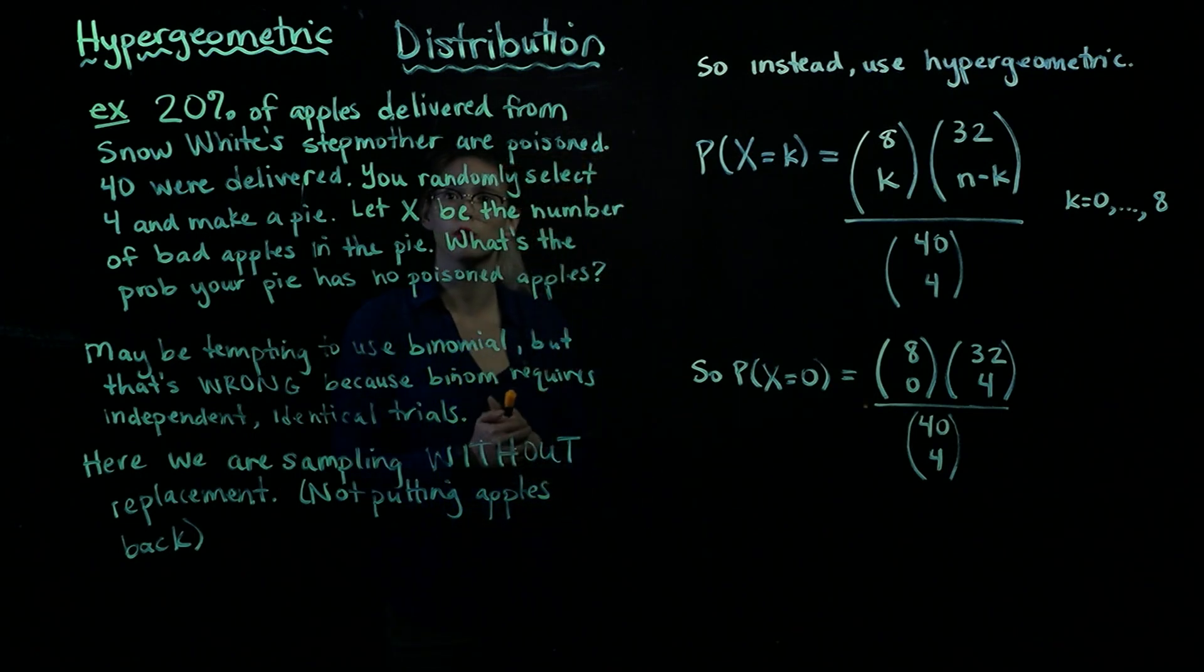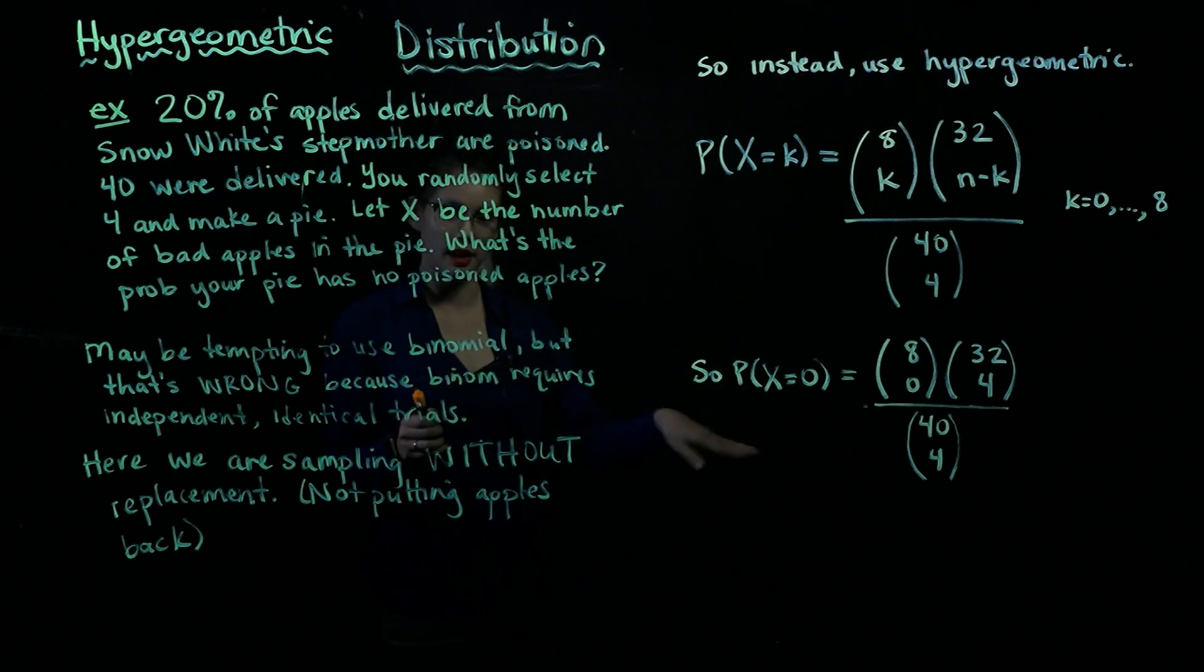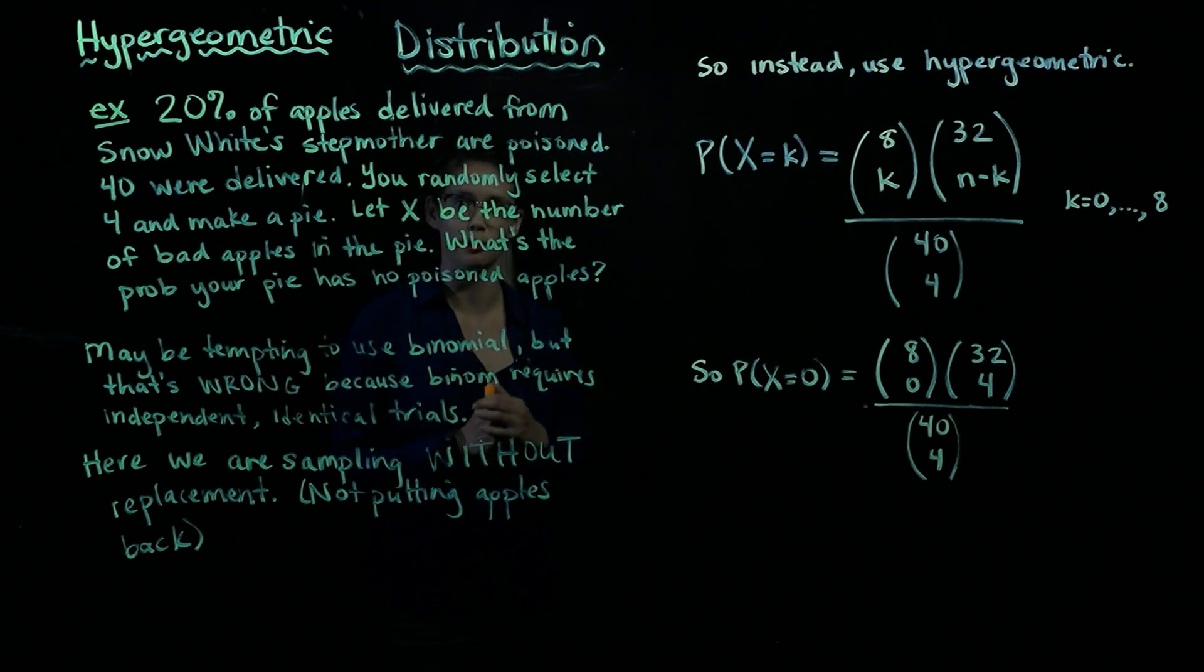So again, it's really important when you're looking at a probability problem to think about, are these trials independent? Or another way, another question you could ask yourself is, am I sampling with replacement or without replacement? Because if you're sampling with replacement, or in other words, putting them back after every draw, then you can use the binomial generally. And if you're sampling without replacement, like in this Snow White example, then you need to use the hypergeometric.